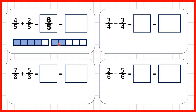Now what we can do is push these parts together, and that gives us one whole fraction bar shaded and then one-fifth of another one. So as a mixed number, six-fifths is one and one-fifth. That's because six divided by five is one remainder one, or because one times five is five, plus one is six — and that's our numerator.